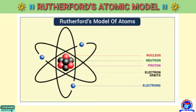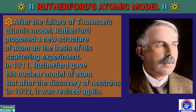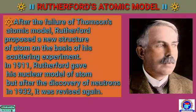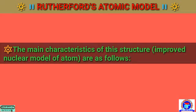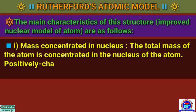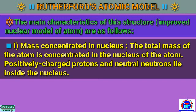Now we understand the Rutherford atomic model. After the failure of Thomson's atomic model, Rutherford proposed a new structure of atom on the basis of his scattering experiment. In 1911, Rutherford gave his nuclear model of atom, but after the discovery of neutrons in 1932, it was revised again. The main characteristics of this nuclear model of atom are as follows. Number 1: mass concentrated in nucleus — the total mass of the atom is concentrated in the nucleus. Positively charged protons and neutrons lie inside the nucleus.